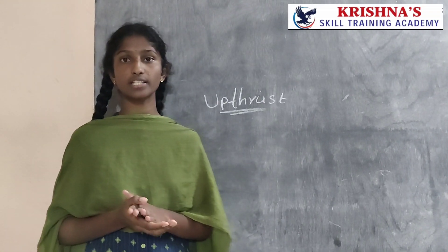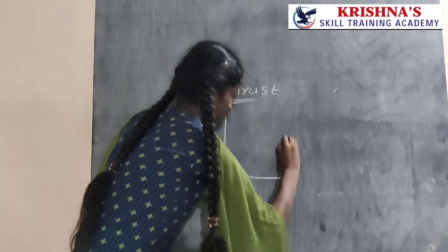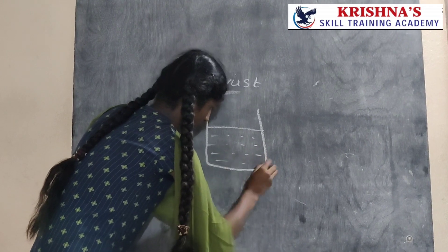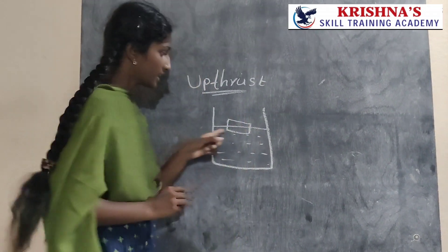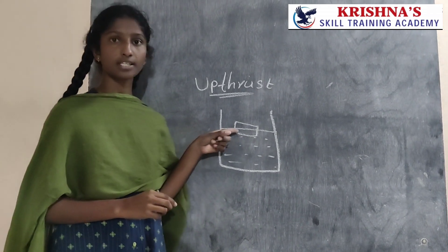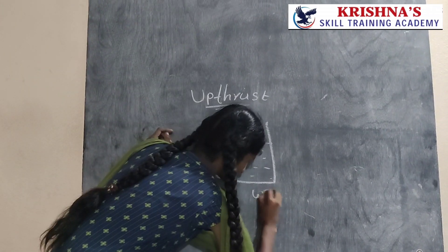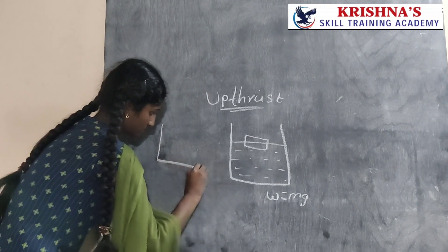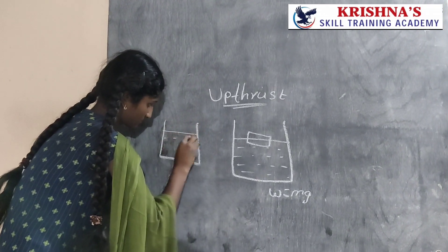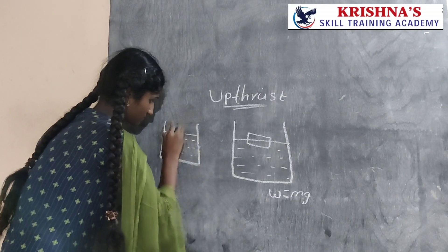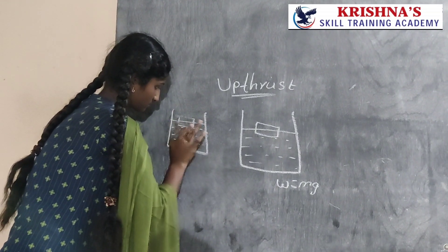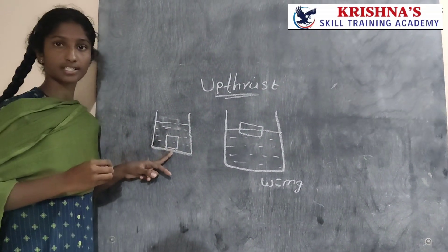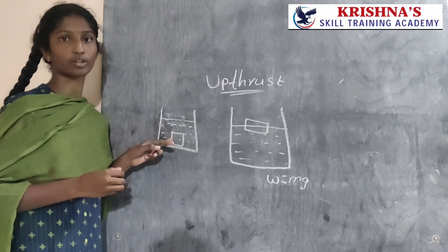Now let us know the examples of upthrust. The object floats because upthrust is equal to the weight of the body — that is, W is equal to mg. Now let us draw another example. In this case, the object sinks because the upthrust is less than the weight of the object.